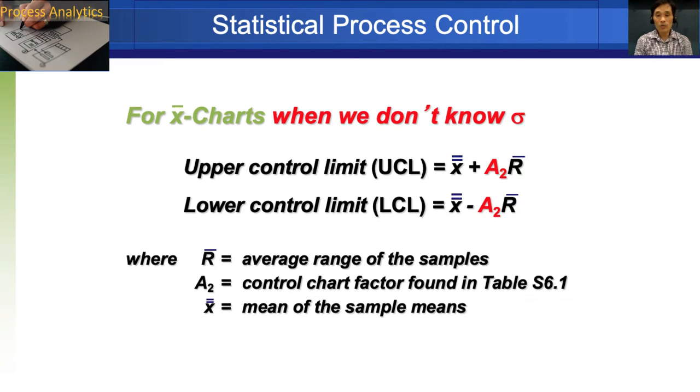Here are the formula to calculate X bar chart. Usually population standard deviation is unknown and at that time the central line X double bar is the mean of the sample means. Upper control limit for that is A2 times R bar, where R bar is the average range of the samples. X double bar and R bar is quite straightforward to find out. A2 is the value given in table S 6.1 which is available in the next slide.